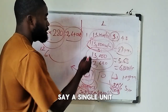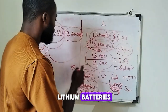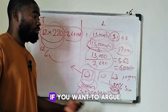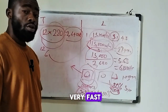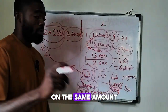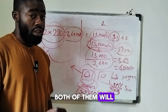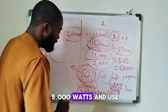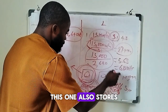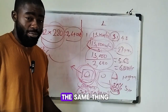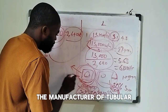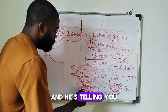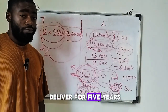When an installer came out claiming that a single unit of a 15 kilowatt-hour lithium battery equals 12 units of tubular batteries, I don't know how he arrived at that calculation — it is incorrect. If you apply the same load to the same amount of stored energy, both battery types will drain at the same time, because both are just storing energy. If one stores 5,000 watts and uses 80% and the other does the same, they deliver the same output for the same duration.